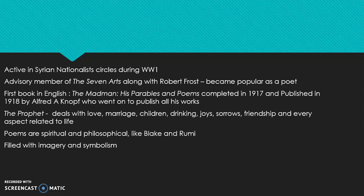Khalil Gibran was also very active in Syrian nationalist circles during World War I, contributing his political views and helping Syrian immigrants in the US overcome starvation and famine. He was an advisory member of the Seven Arts journal, alongside Robert Frost, through which he became popular as a poet. His first book in English was 'The Madman: His Parables and Poems,' completed in 1917 and published in 1918 by Alfred A. Knopf, who went on to publish all his works.